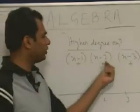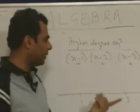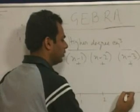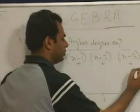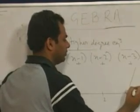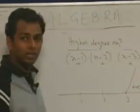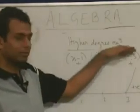Positive into positive into positive will give positive. So it means we will get a graph like this one — positive, above the line.